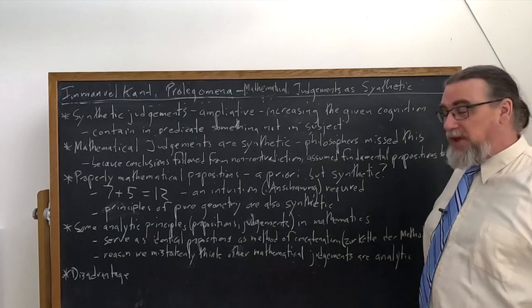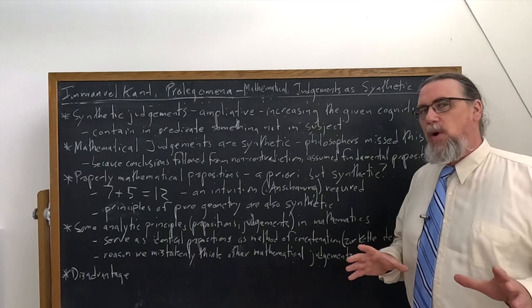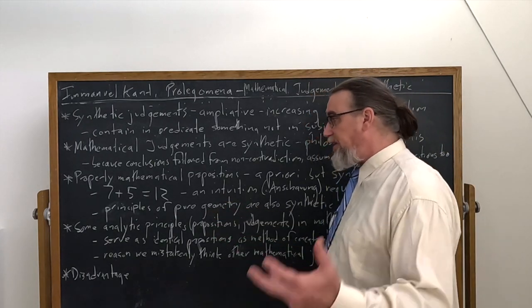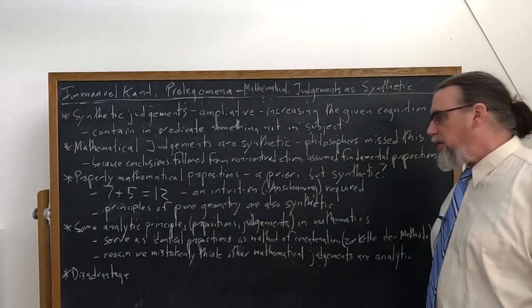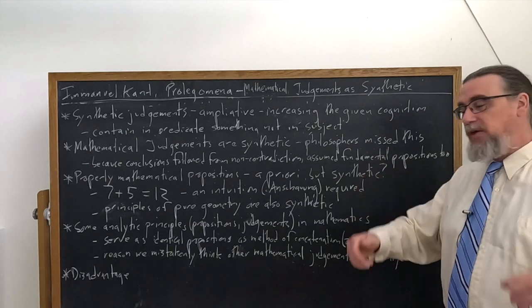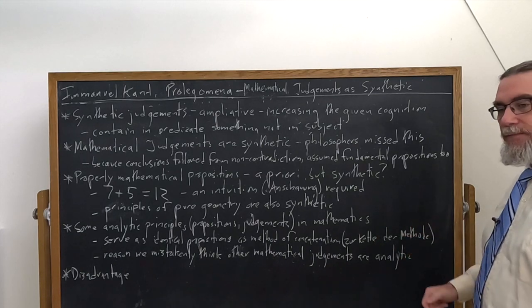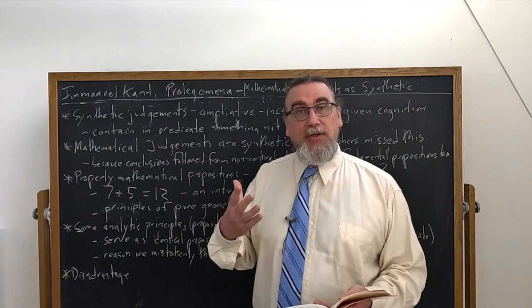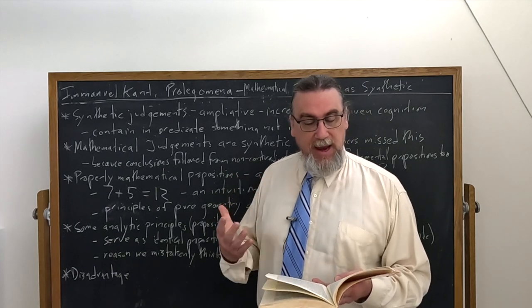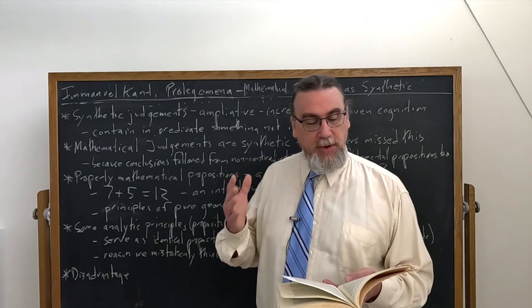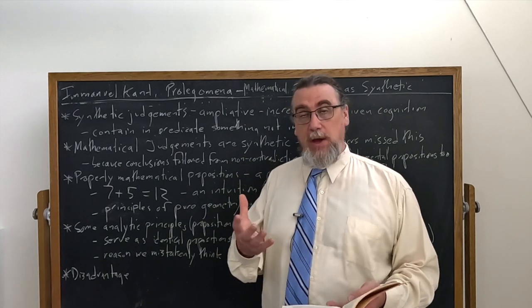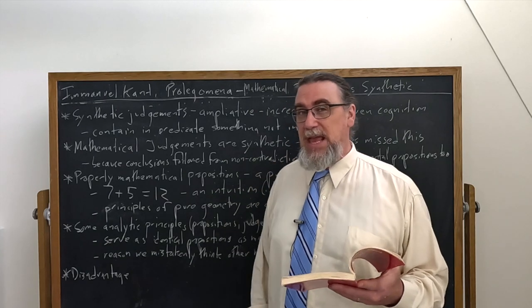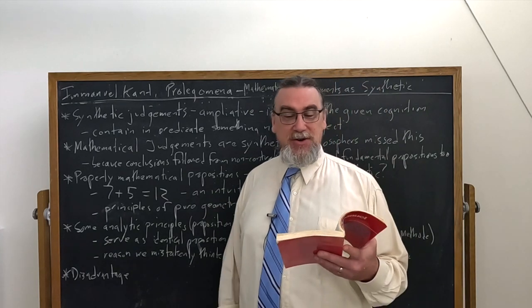Now Kant will admit that there are a lot of things in mathematics that do seem like analytic principles. And he uses not just principles, but propositions and judgments to describe these. And it is true that these exist in mathematics and in geometry, but he says, what are these doing? What is their function? It's not to actually increase our knowledge. It's just to serve as identical propositions as what we call a method of concatenation, putting things together, the Kette der Methode, a way of arranging things, a way of drawing further conclusions, drawing out the implications of them. So he gives some examples of these: A equals A, or the whole is equal to itself, or A plus B is greater than A, the whole is greater than its part. And he says we can recognize these are valid, but they're only admitted in mathematics because they can be presented in some intuition.